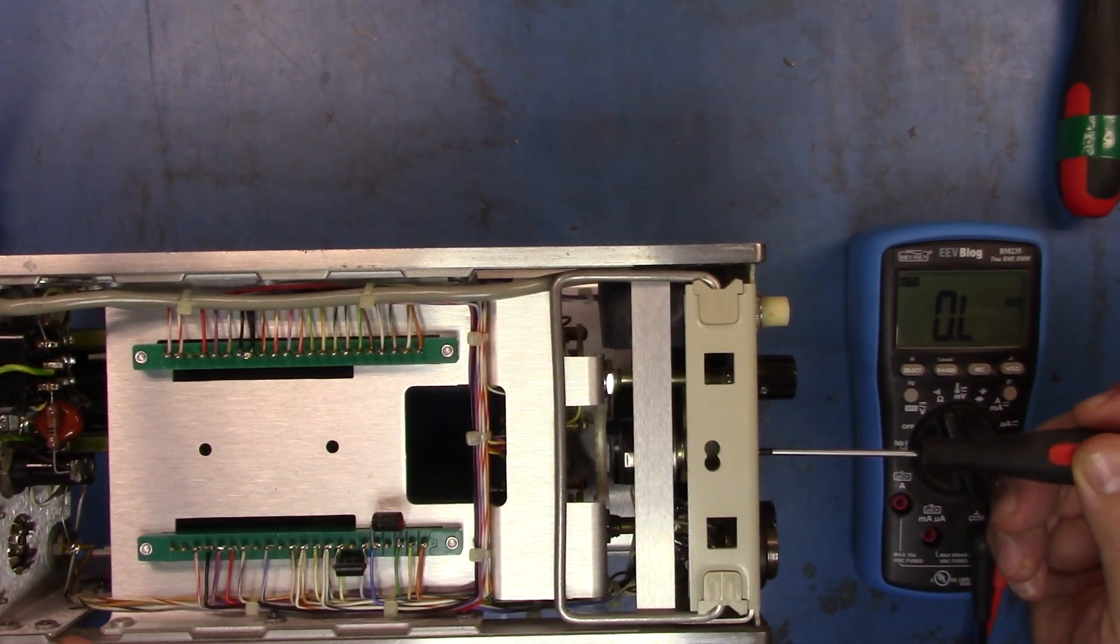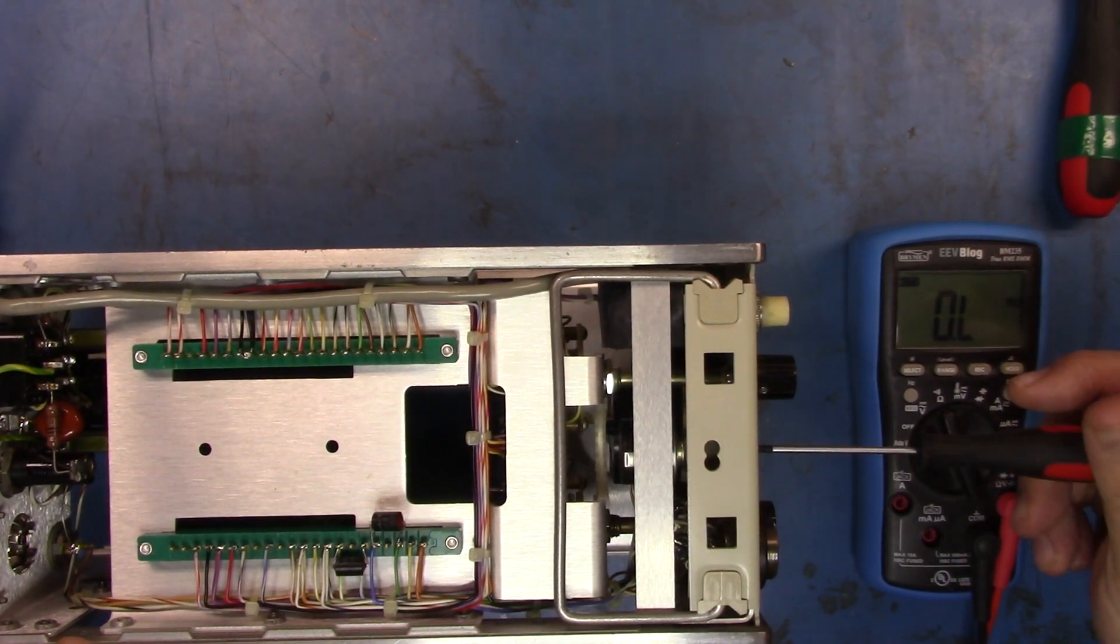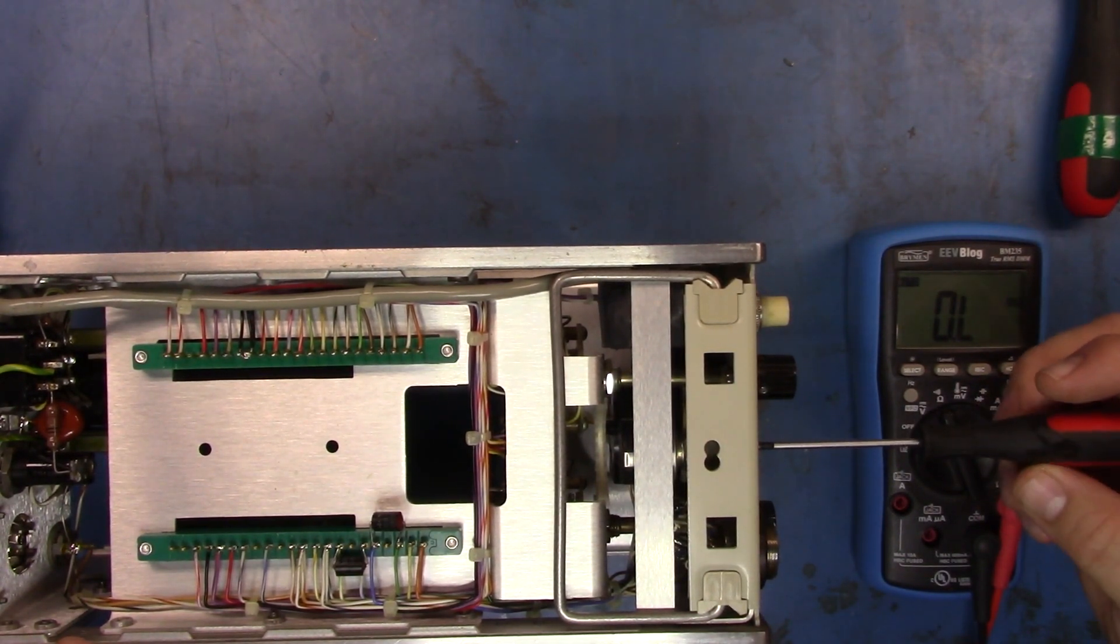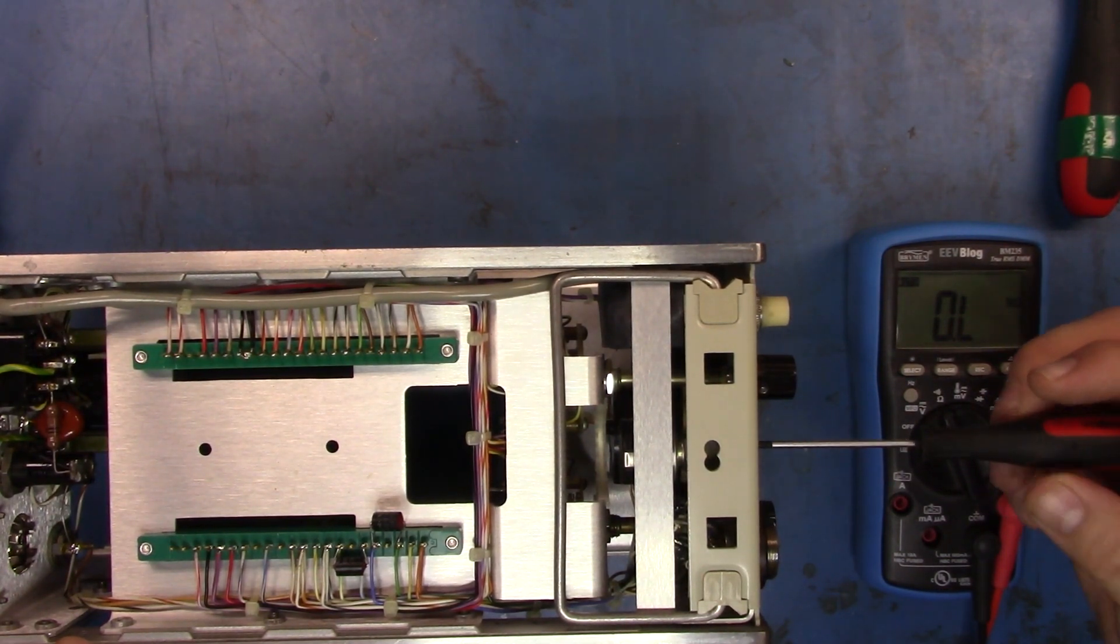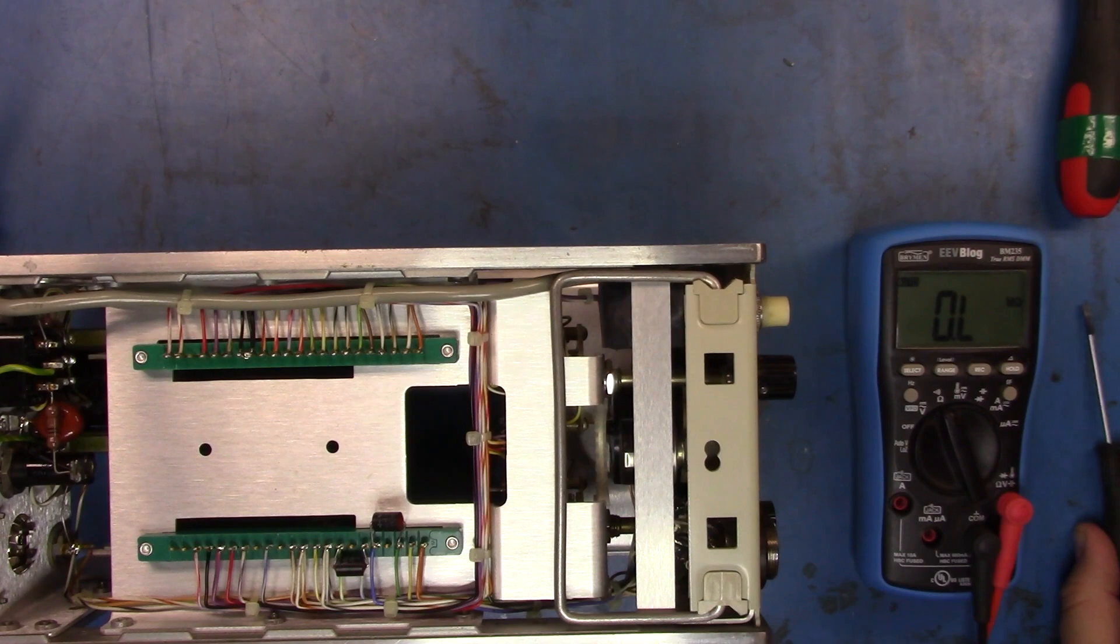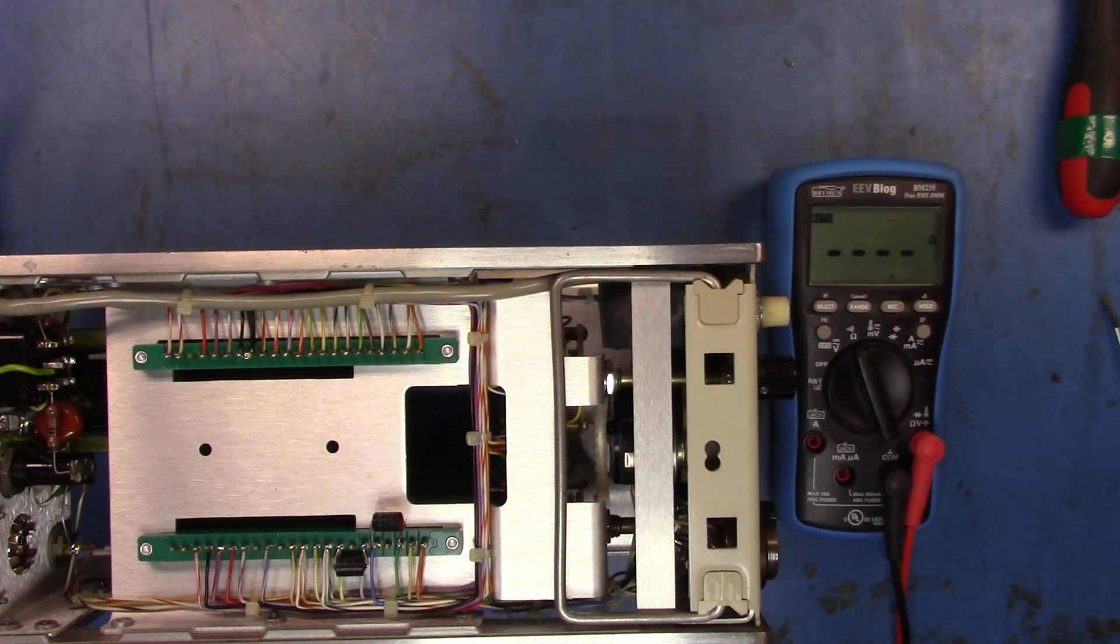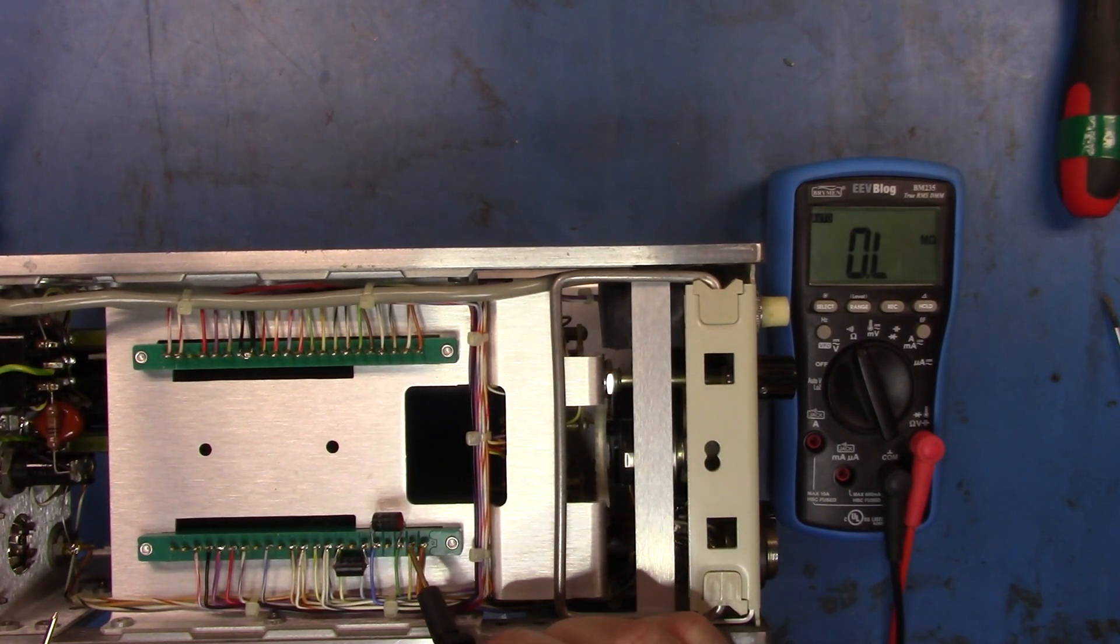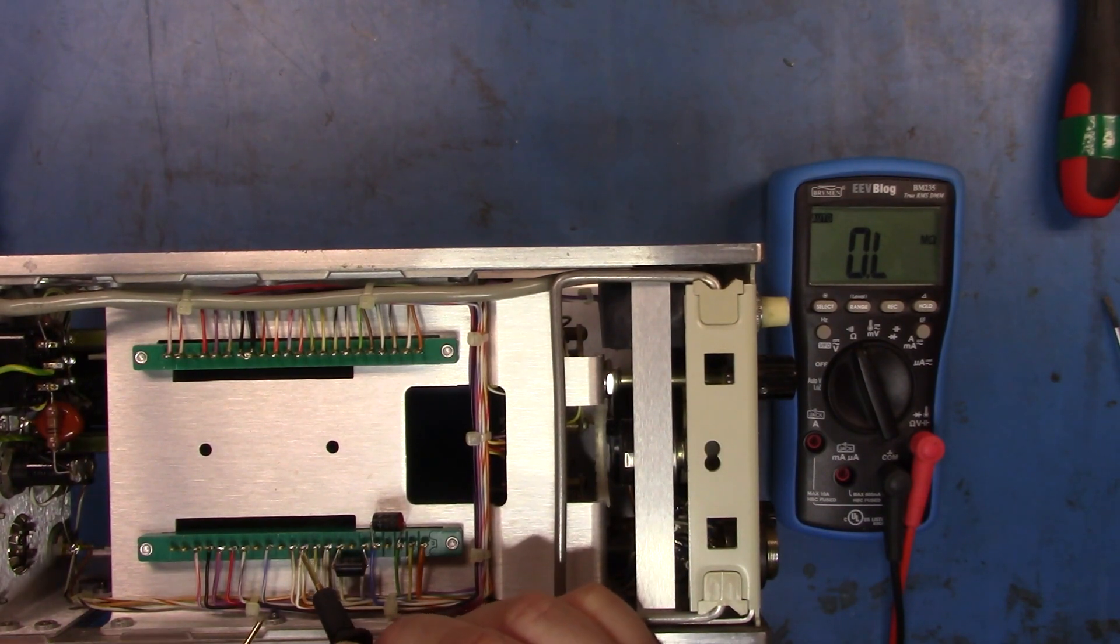So let me turn that all the way, all the way clockwise or anti-clockwise. Sorry. Okay. And yep. We're measuring virtually, we're measuring pretty much zero. Now pins 11, 1, 2, 3, 4, 5, 6, 8, 9, 10, 11, and 12.